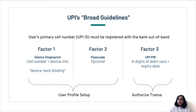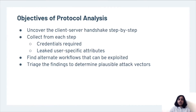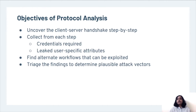To set up a UPI PIN, the user has to provide six digits of her debit card number and expiration date. When we started this research, this is all we knew about the UPI protocol. So we had to uncover the client-server handshake of the protocol step by step, find out what credentials were required in each step, and what attributes were leaked from each step. We also looked for alternate workflows which can be exploited and tried the findings to determine any plausible attack vectors.